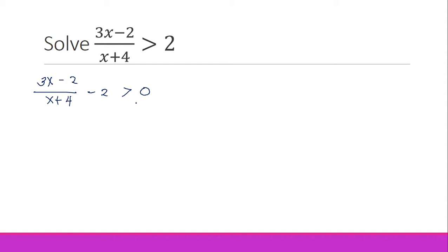Notice that one term is a fraction and the other is a whole number. We must follow the rule for adding fractions — denominators must be the same. So we multiply the whole number by the denominator of the fraction, giving us (3x − 2)/(x + 4) − 2 · (x + 4)/(x + 4).